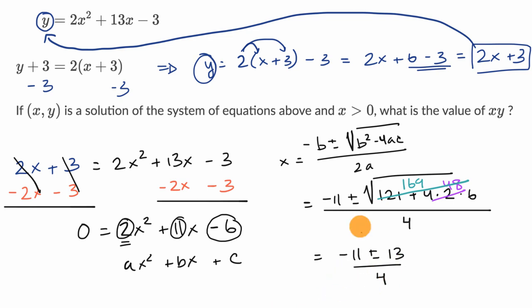Now we're going to have two roots here, but they gave us a little bit of an extra constraint. X needs to be greater than zero. If we did negative 11 minus 13 over four, that's going to give us an X value less than zero. So the root that we're going to focus on is when we add the 13. So negative 11 plus 13 is, let me actually do the two options. Negative 11 plus 13 is two over four.